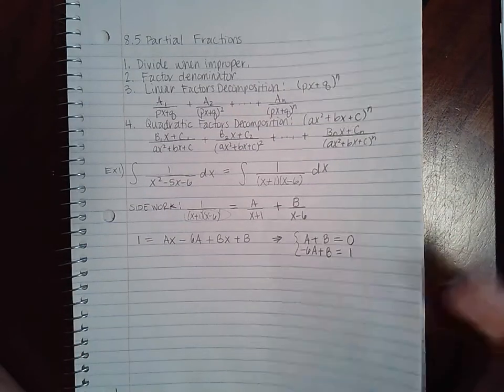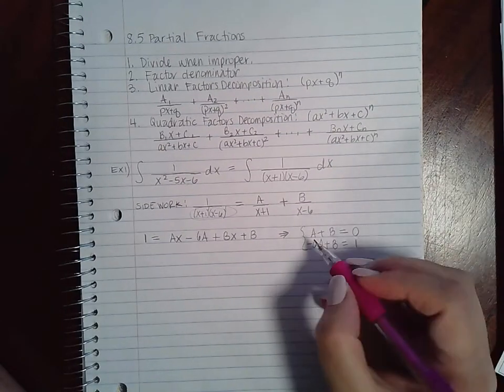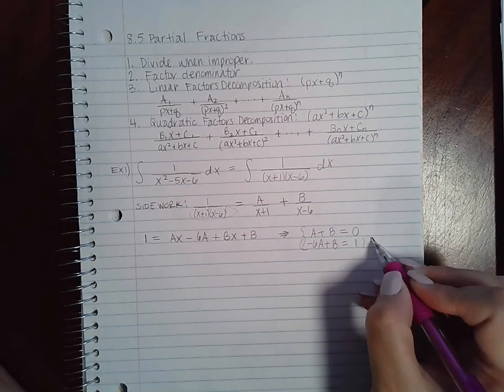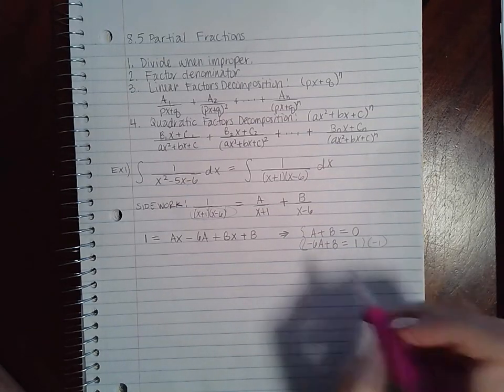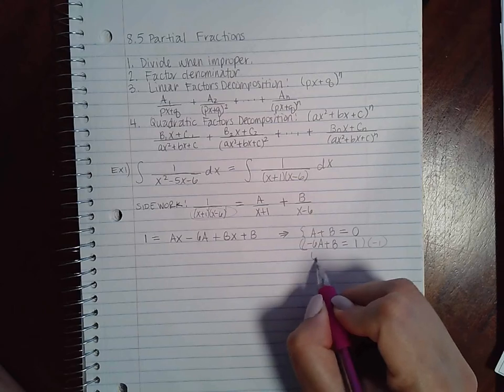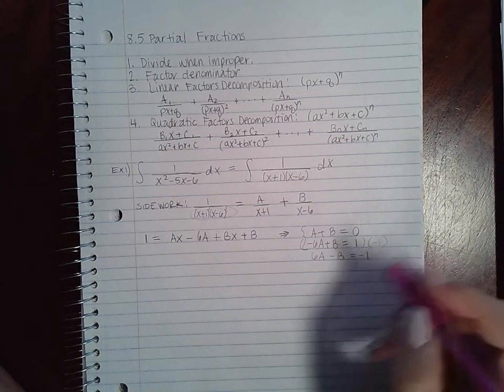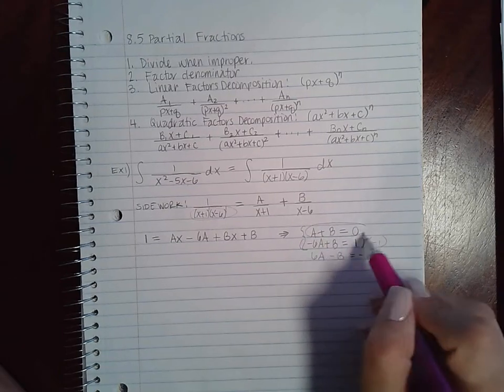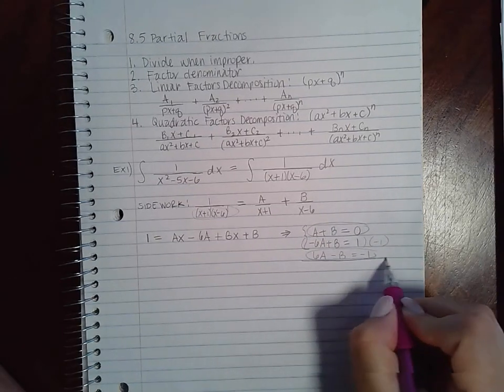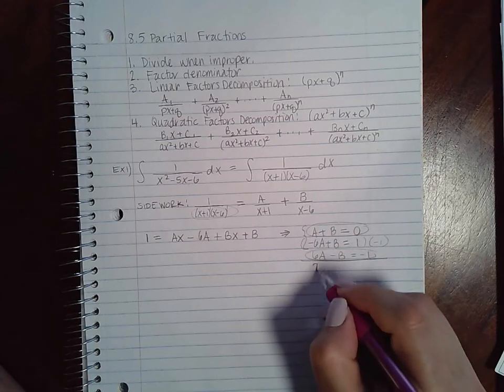Now what we can do is we can solve them whichever way we want: substitution, elimination. I particularly favor elimination method, so I will multiply this equation by a negative, so I end up with positive six a, negative b, and negative one.